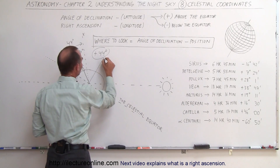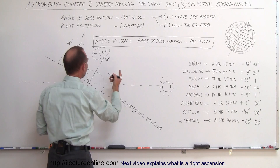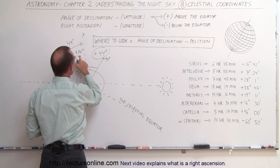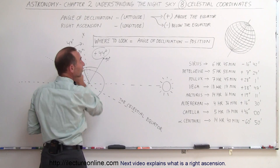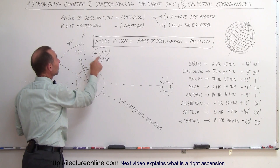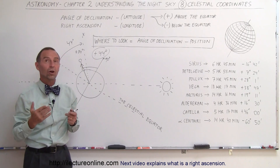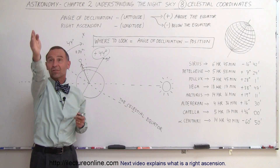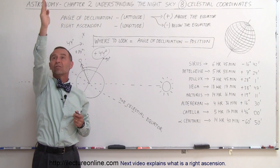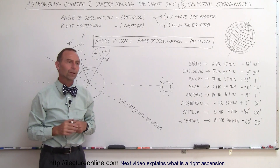If the star is at the north pole — 90 degrees, like Polaris — that is at an angle of 90 minus 34, which is 56 degrees. So to find Polaris, the north star, I have to look at an angle of 56 degrees away from the zenith, toward the north.